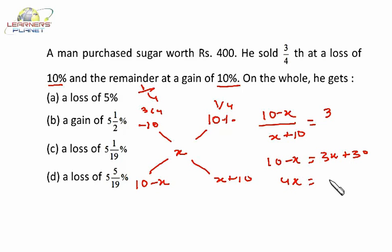That means 4X equals minus 20, that means X equals minus 5. If X is negative, that means overall there is a loss which is 5%. So very simple problem, you can calculate it quickly and easily.